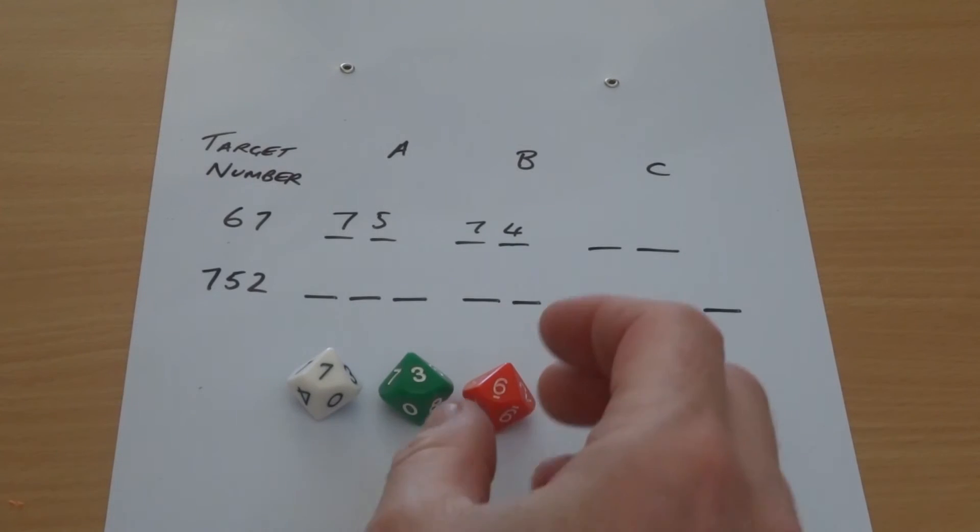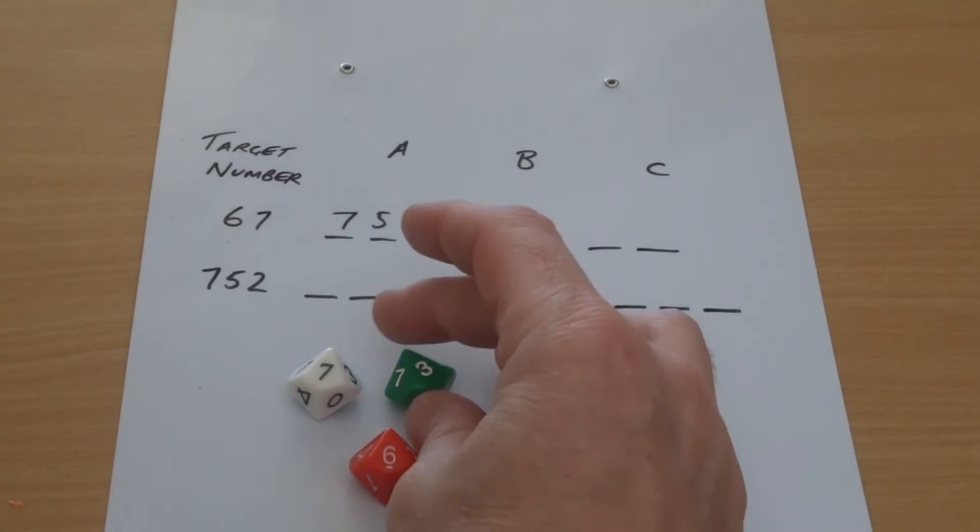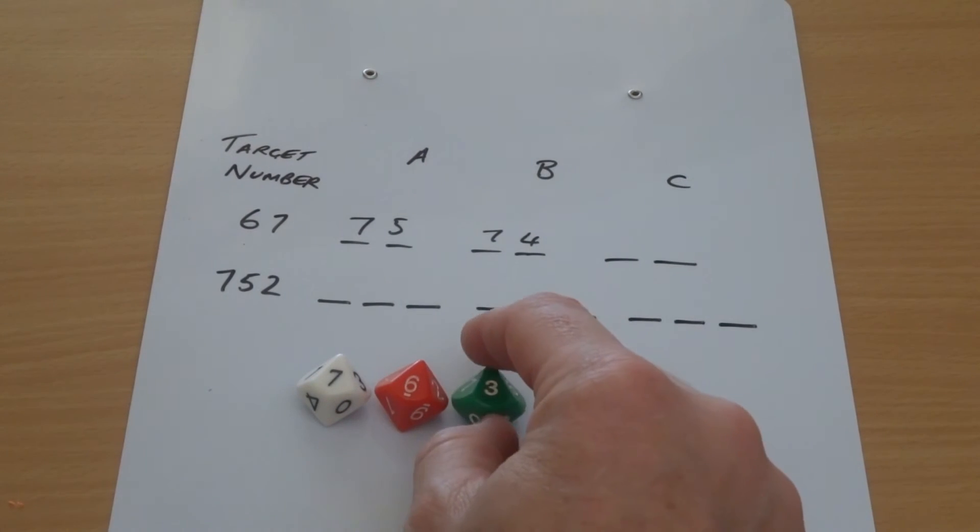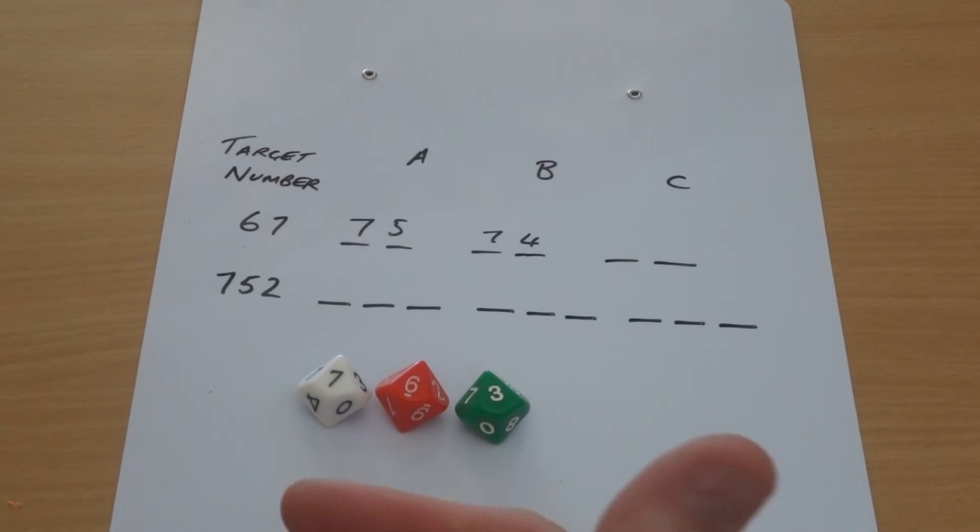We're emphasizing the place value idea because where the digit sits makes a difference. So we're going to try 763, and the next player would roll with their numbers and the third player and so on.